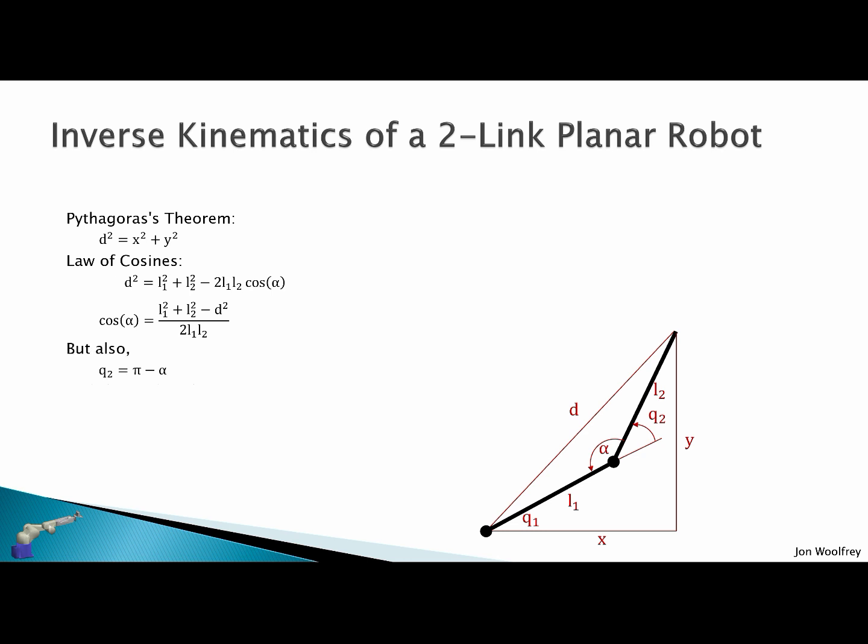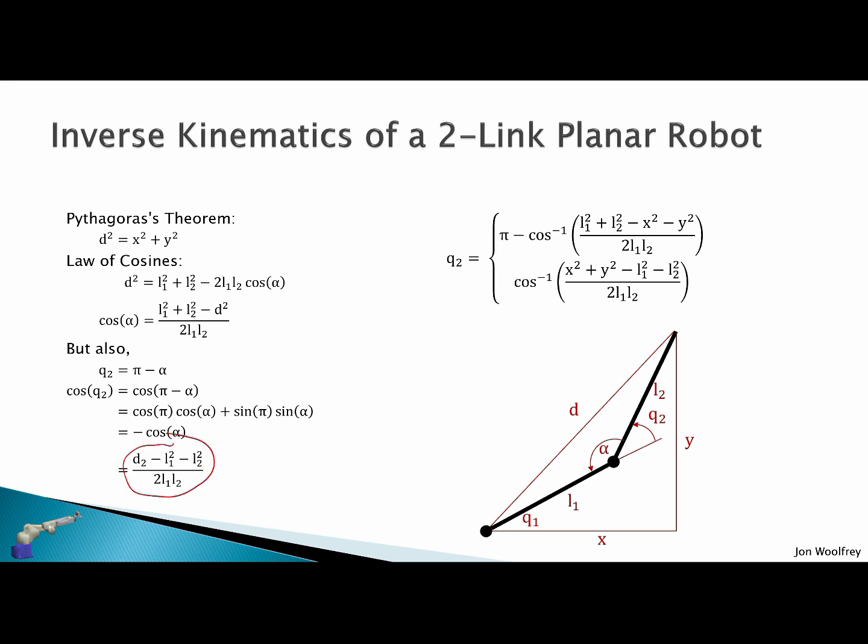I just solve for cos alpha which gives this expression here. But we also know that Q2 must equal pi minus alpha since these two must sum to 180 degrees. Therefore cos Q2 is cos pi minus alpha, and using trigonometry we get this expression. Therefore we have this expression and this is equal to the negative of this here. So what we have is two potential configurations for joint Q2. The first being pi minus the cosine inverse of this expression. And the other being the inverse cosine of this expression here. So we have two solutions.